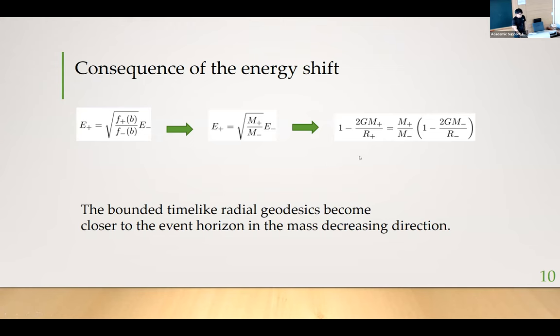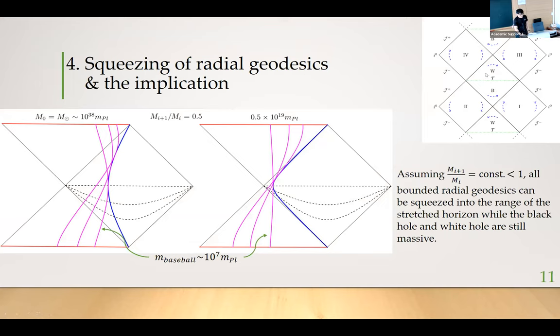Remember the model we consider is actually a cyclic model. They are infinite many of this cycle in this type of model. If we consider that the mass is always decreasing in one direction, we can show that by a given finite number of cycle, all of the bounded geodesic in one state, they will be all squeezed inside the range of the stretch horizon. This means that when they go out of the white hole, they cannot away from the event horizon more than one Planck length.